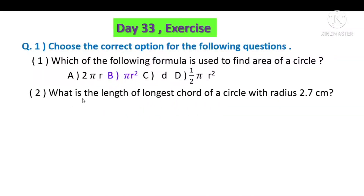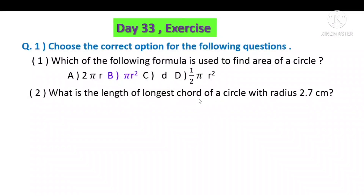Second question: what is the length of the longest chord of a circle with radius 2.7 cm? The longest chord is the diameter of the circle, and the diameter is twice the radius.